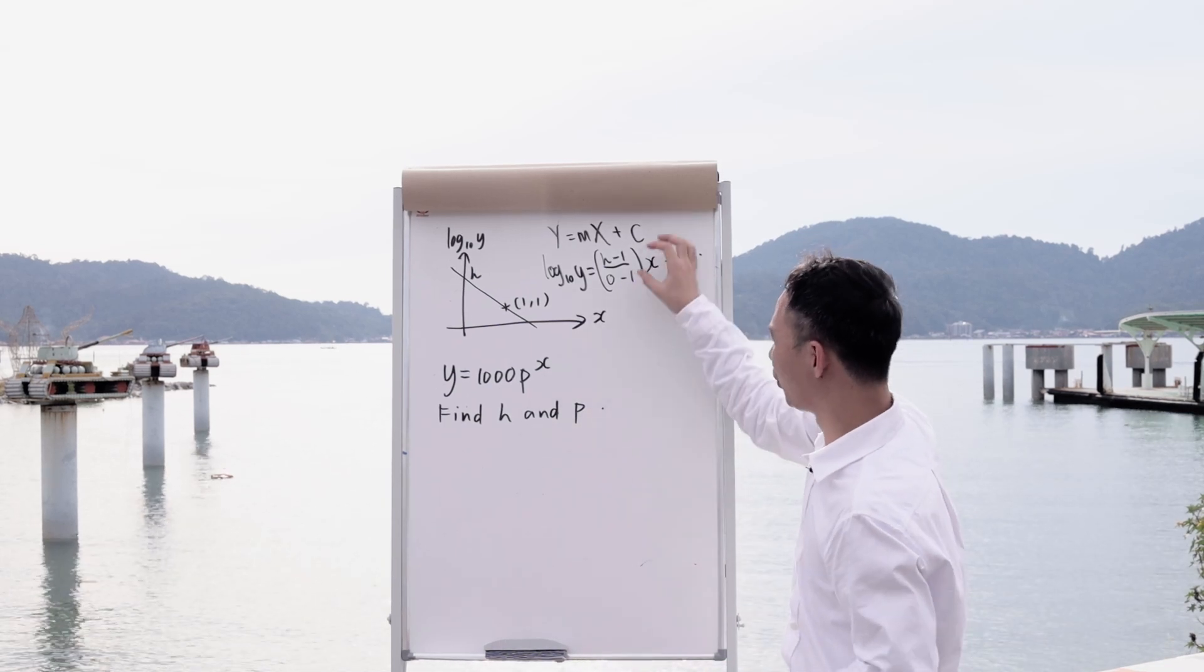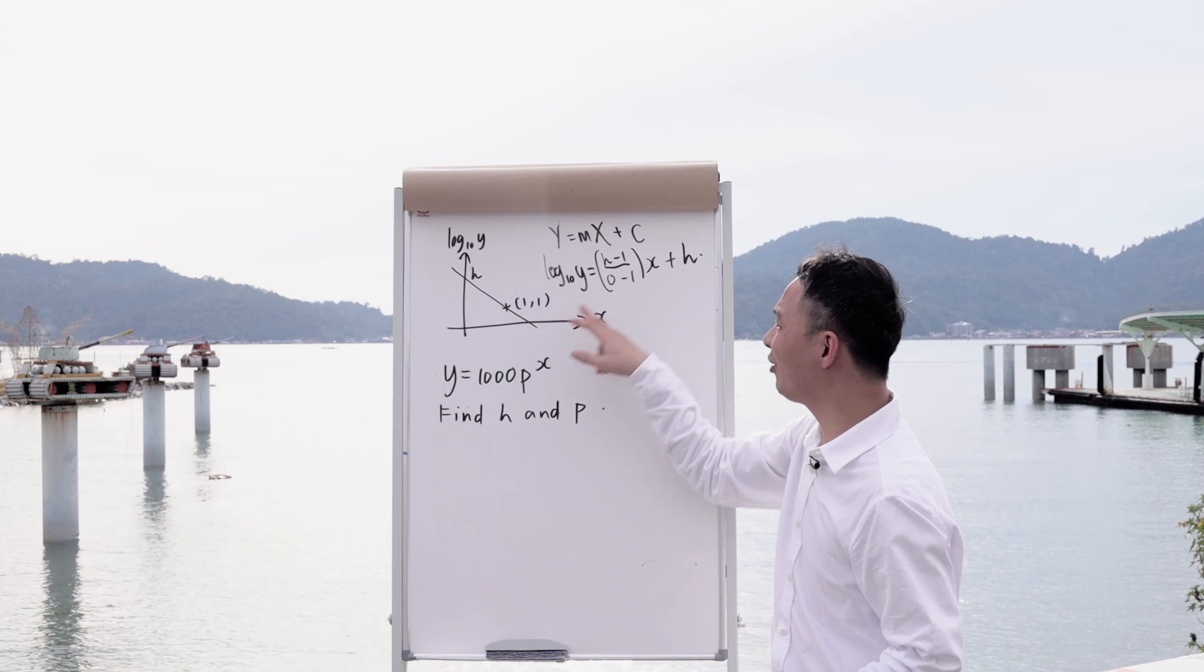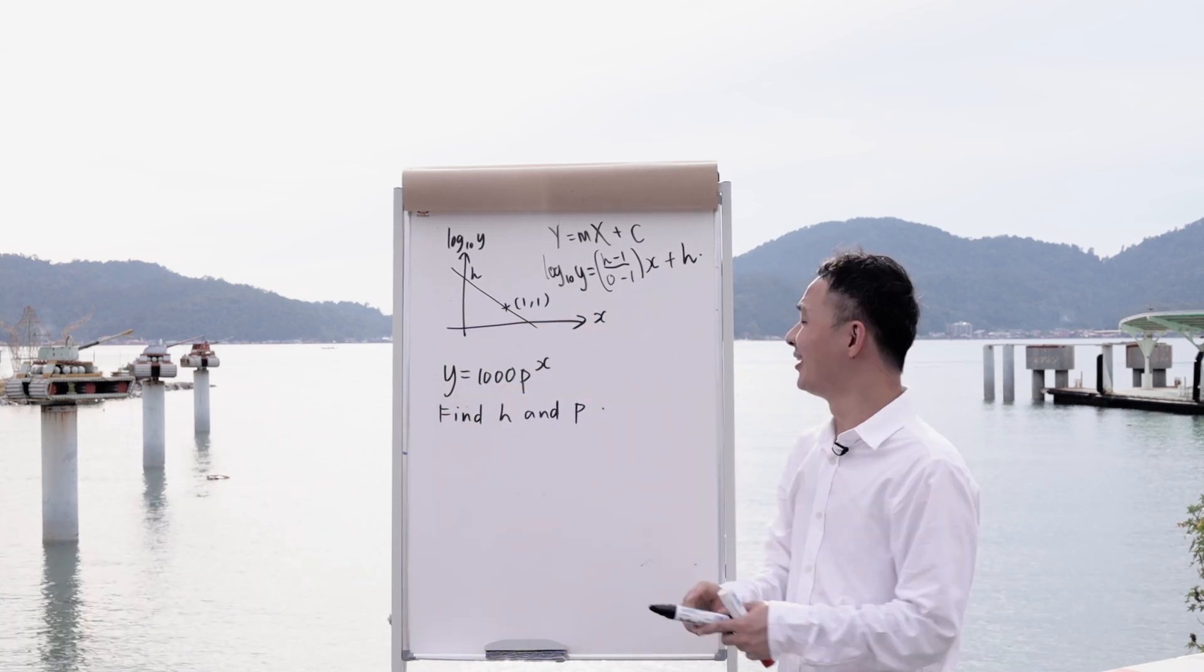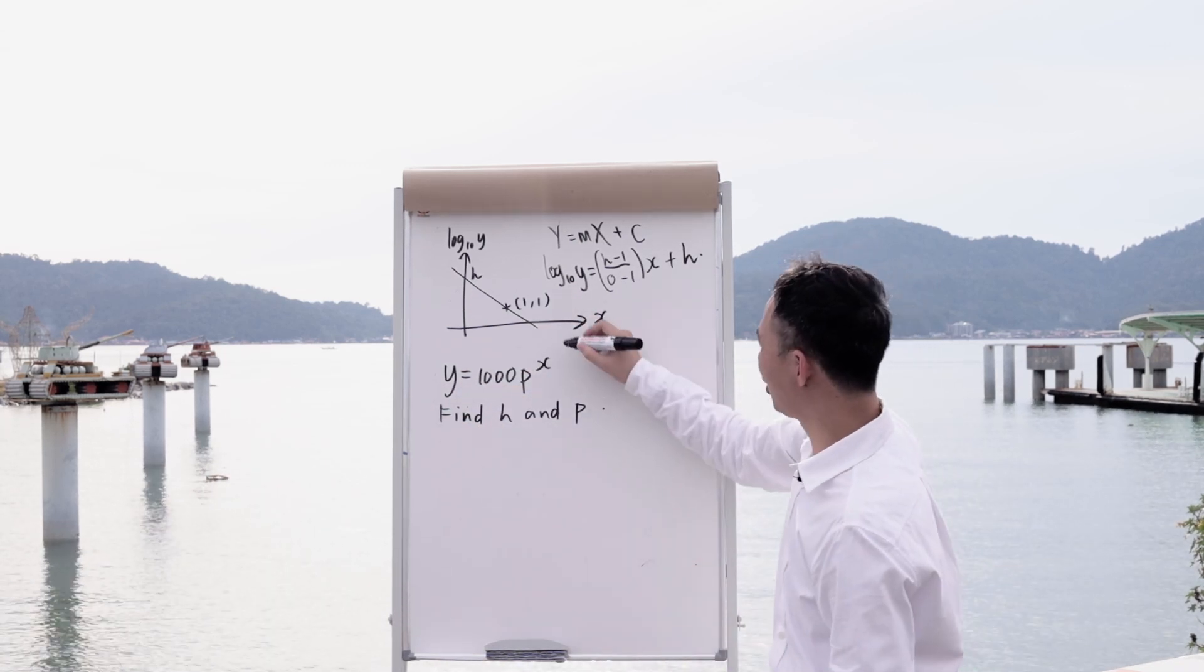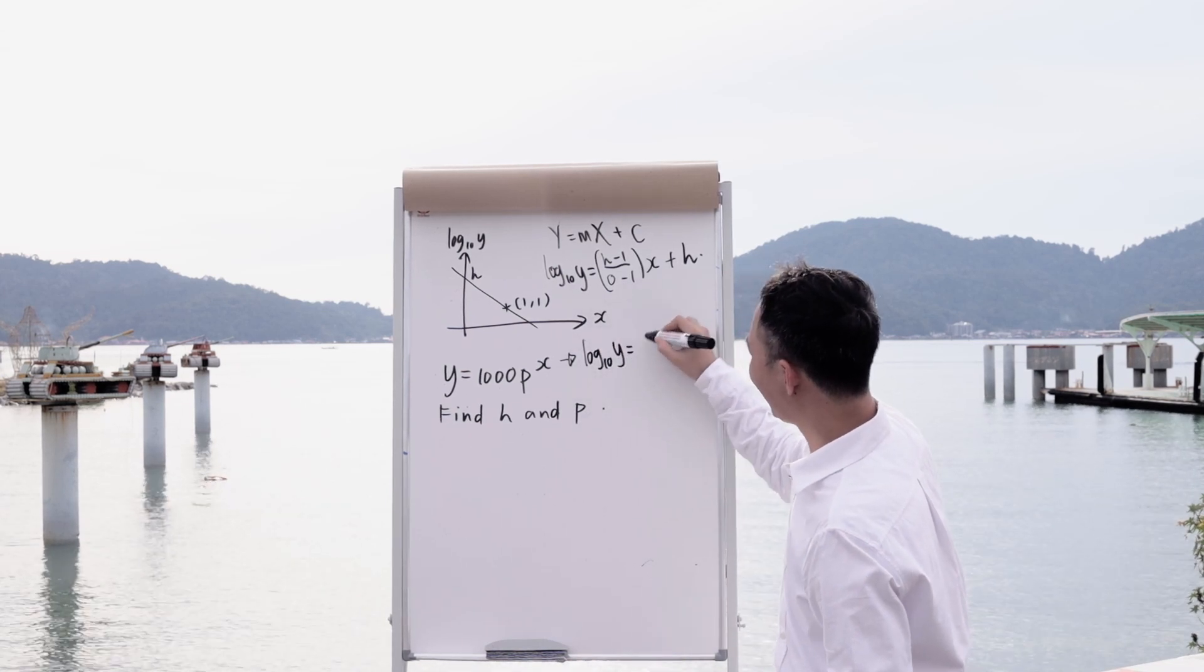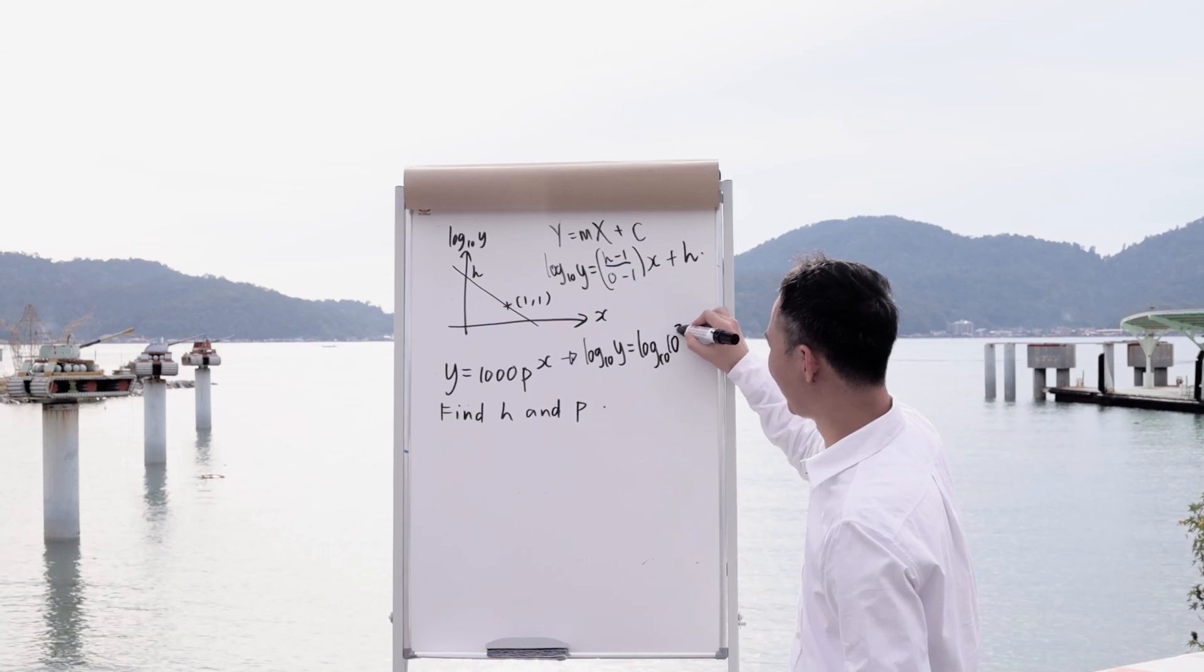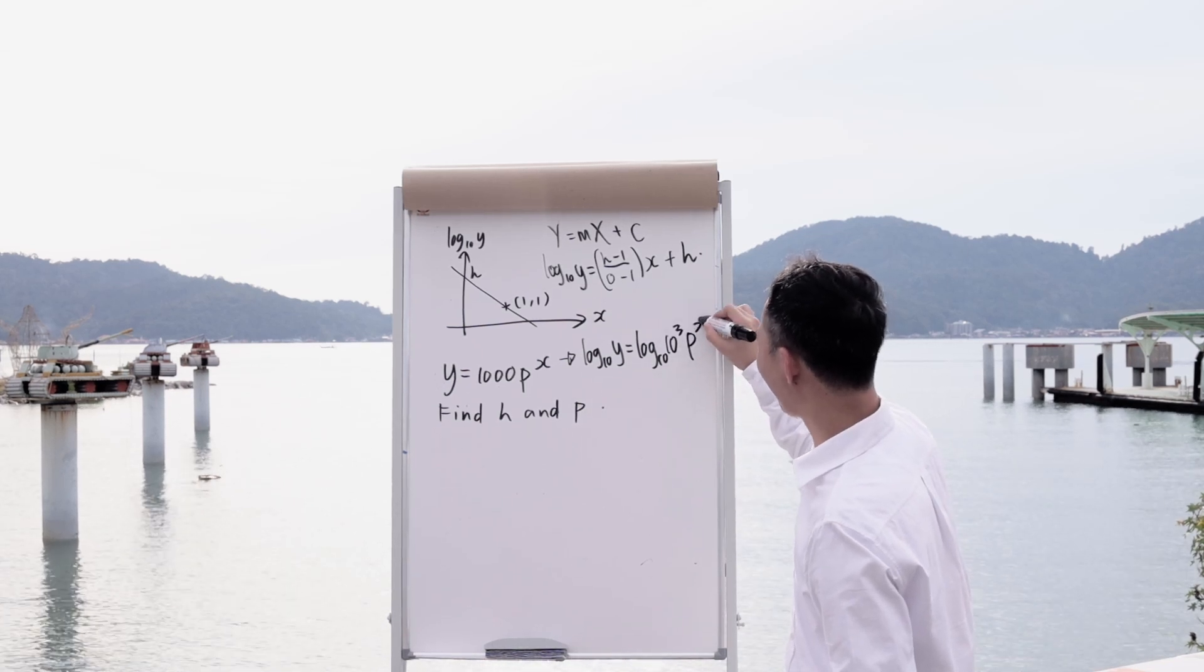So right now I want to make the connection between these two equations. Obviously I need to add the log 10 for both sides because this is log 10y but this one is just y. So what I will do is change this equation into log 10y and then I add the log 10 for the other side. It will be 1000 will be 10 power 3 and then multiply with px.